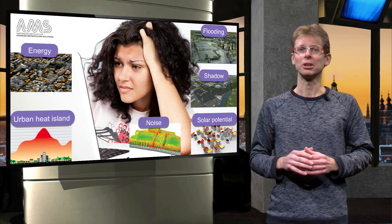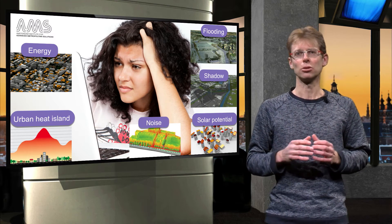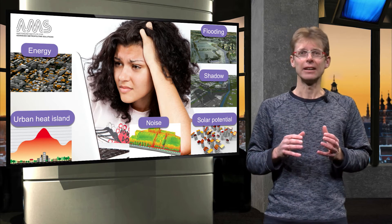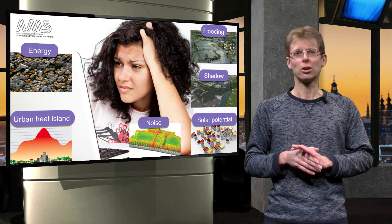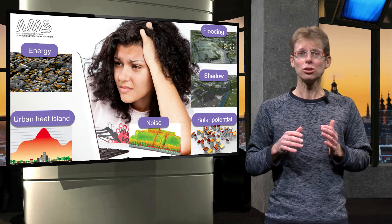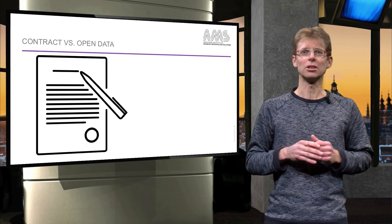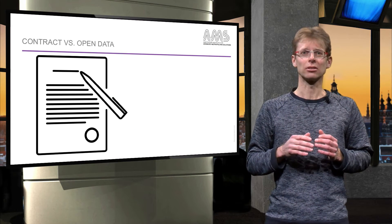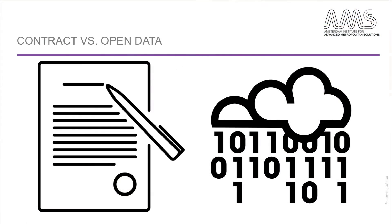Users of spatial data need to be familiar with the various issues related to data collection. They also need to know where to find the data, and whether they are allowed to use the data. For example, what are the legal constraints when it comes to using data? Sometimes data can only be used after a complex legal contract is signed. If data is provided without any restriction, it is known as open data. The question remains whether it is allowed to combine restrictive data with open data.